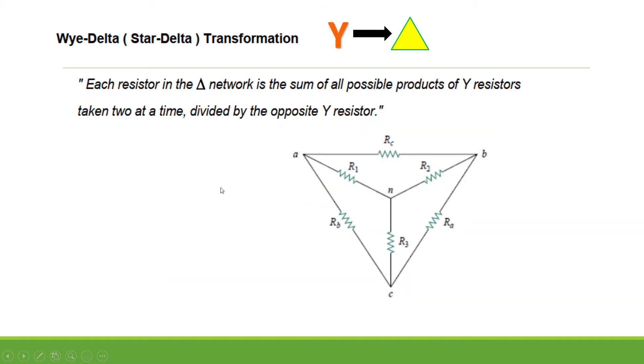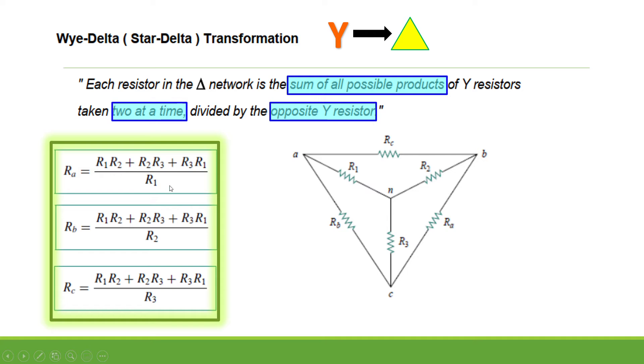On the other hand, if we're going to convert Y network to Delta network, each resistor in the Delta network is the sum of all possible products of Y resistors taken two at a time, divided by the opposite Y resistor. To solve the Y to Delta conversion, we're going to use these formulas.